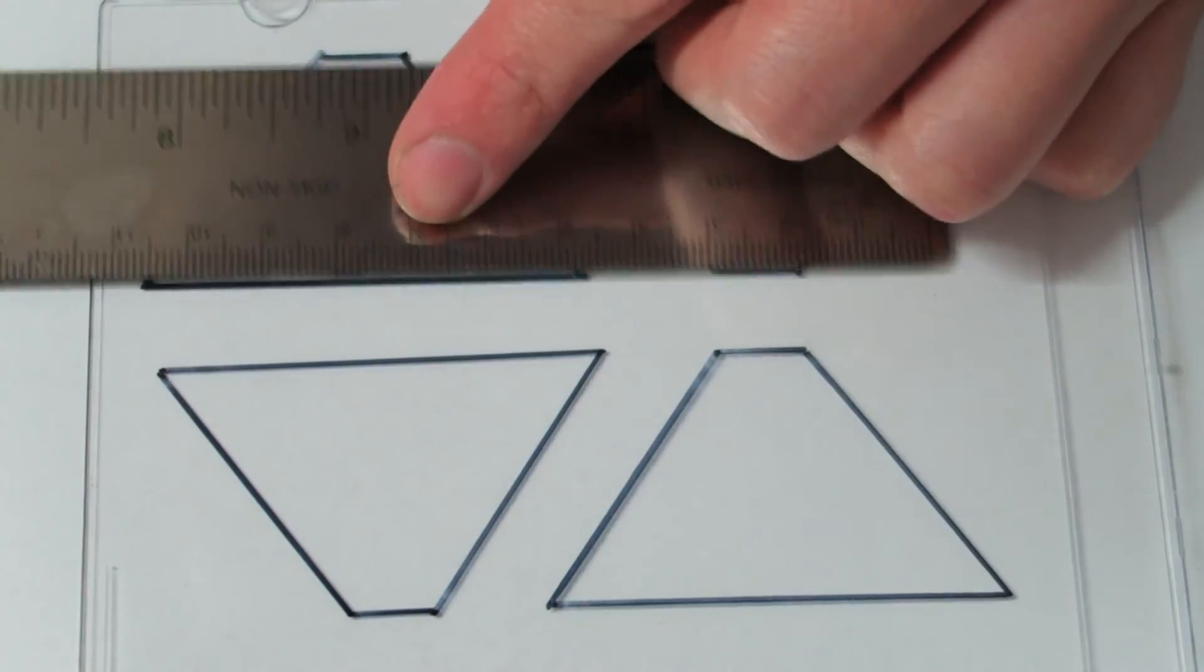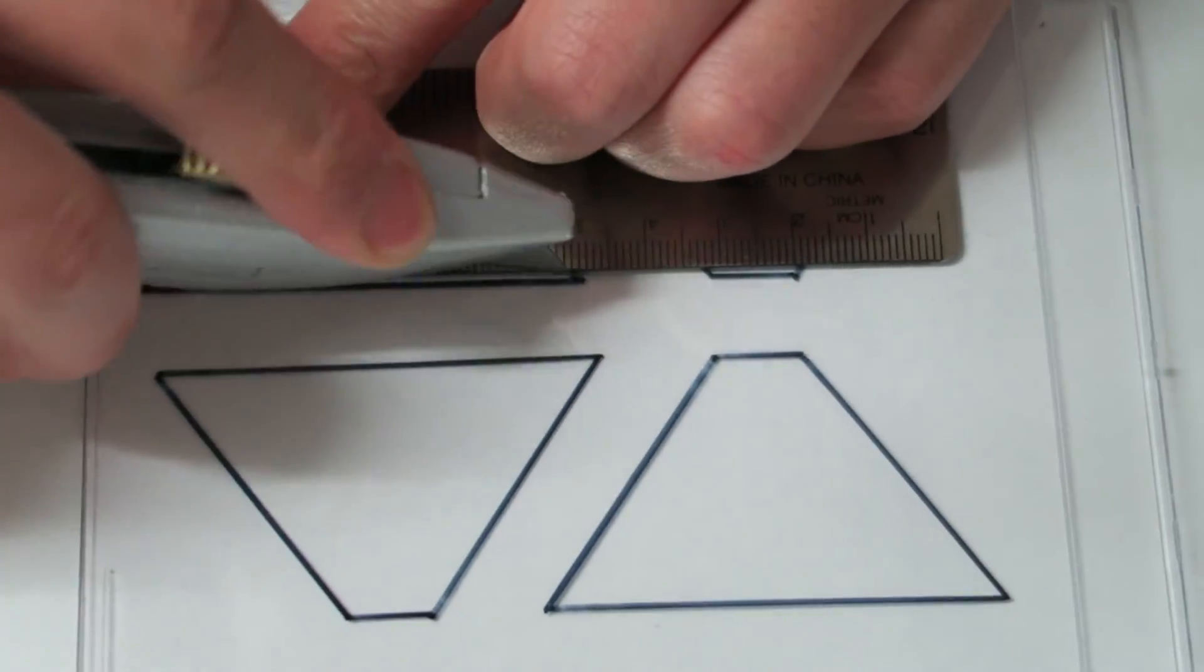So after you've traced out four of the templates onto the case, carefully cut these out with the ruler and the craft knife.